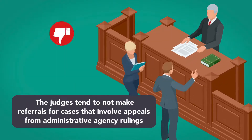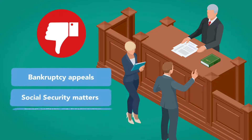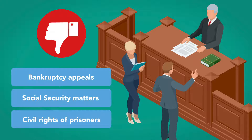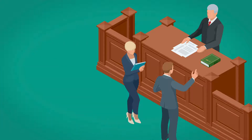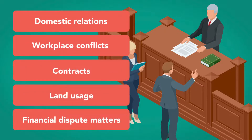The review also showed that judges tend not to make referrals for cases that involve appeals from administrative agency rulings. Bankruptcy appeals, social security matters, and cases involving civil rights of prisoners are also among those where mediation referrals are not commonly made. Cases most often sent to mediation include those involving domestic relations, workplace conflicts, contracts, land usage, and financial dispute matters.